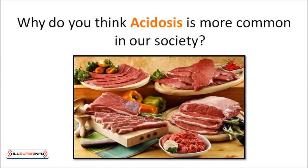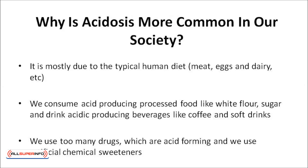Why is acidosis more common in our society? The reason is mostly due to the typical human diet, which is far too high in acid-producing animal products. In addition, we consume acid-producing processed foods like white flour and sugar, and drink acid-producing beverages like coffee and soft drinks. We use too many drugs, which are acid-forming, and artificial chemical sweeteners like NutraSweet, Spoonful, Sweet and Low, Equal, or Aspartame, which are poisonous and extremely acid-forming.